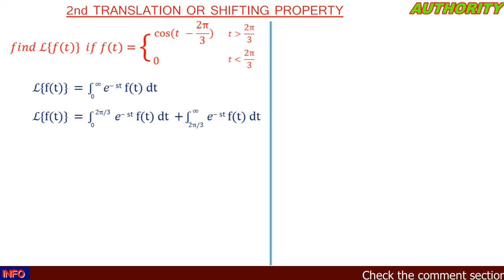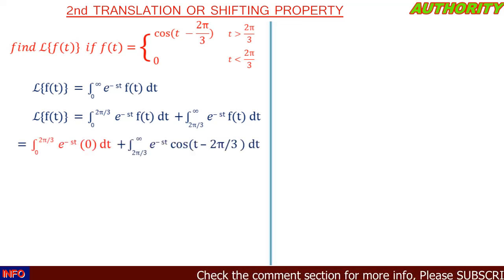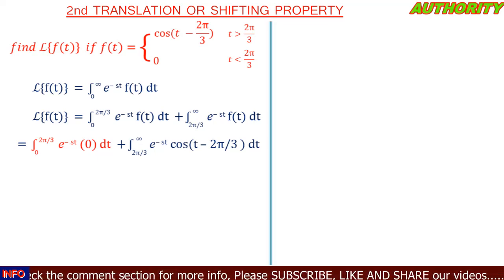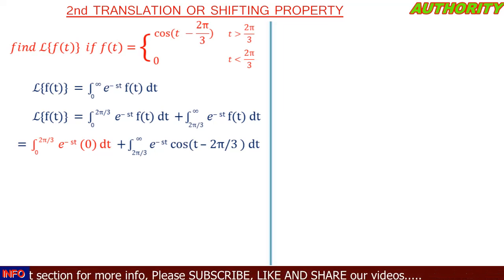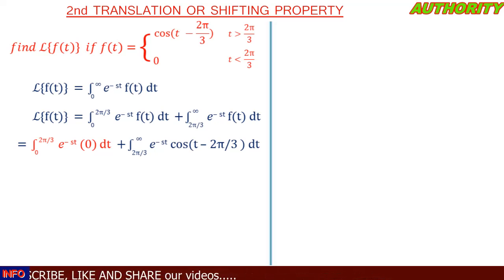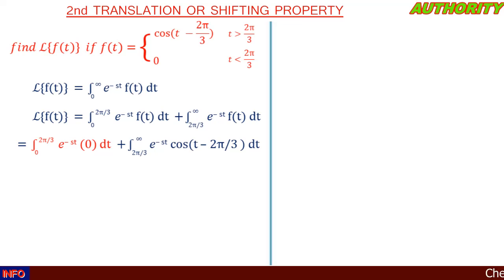From zero to 2π/3, t is less than 2π/3, so f(t) equals zero. That means in place of f(t) we write zero. The entire first integral becomes zero because the function is zero there. The only remaining part is the second integral.